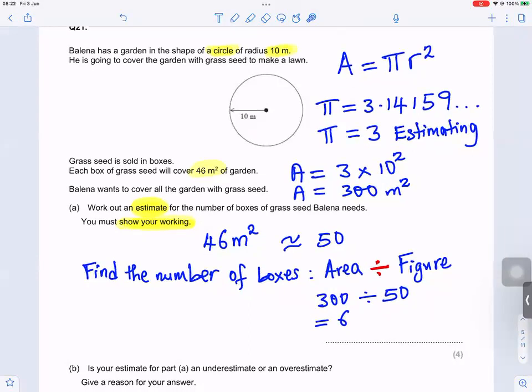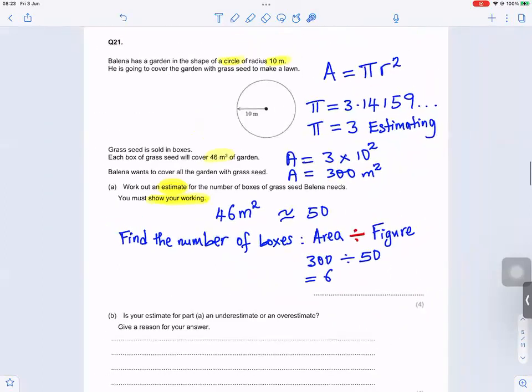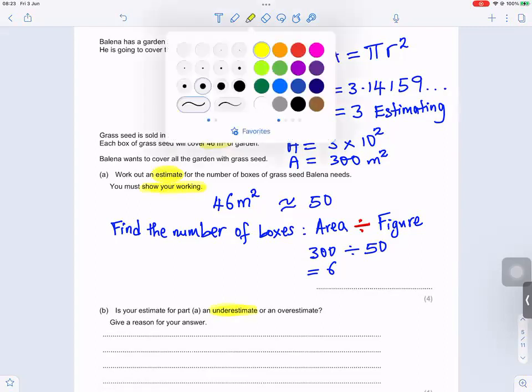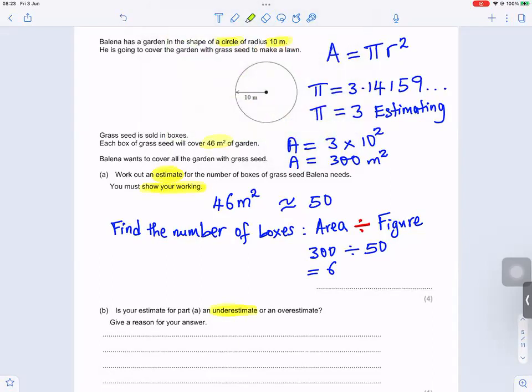Now we go to part B. Part B says, is your estimate for part A an underestimate or over? There's two words, they underestimate and overestimate.